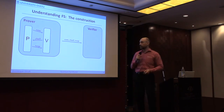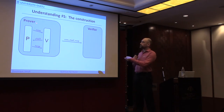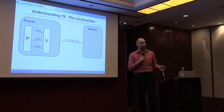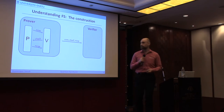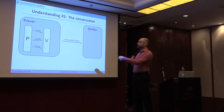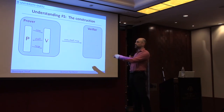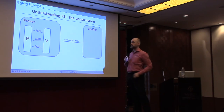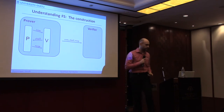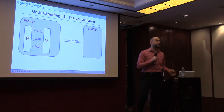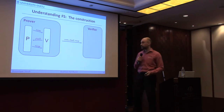Let me sketch how this is done. The Fiat-Shamir prover internally simulates an interaction between the prover and verifier for the sigma protocol. The prover runs the sigma protocol, which gives a commitment; the verifier answers with a random challenge; and the prover answers with a response. The prover then takes these three messages and sends them to the verifier over the network. As written like this, this will not be a secure non-interactive proof system.